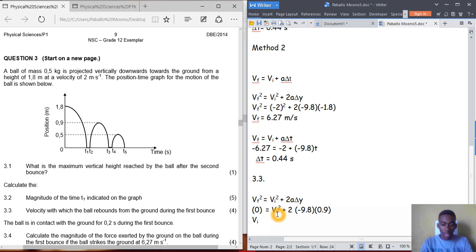So this equals 2 times 9.8 times 0.9. When we transpose, the negative becomes positive in the multiplication. So we transpose to get positive, which is 17.64, and this means initial velocity.